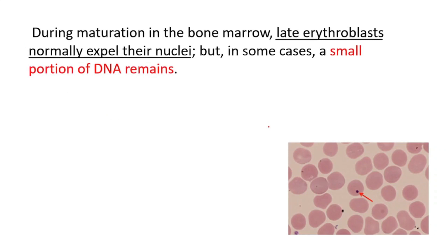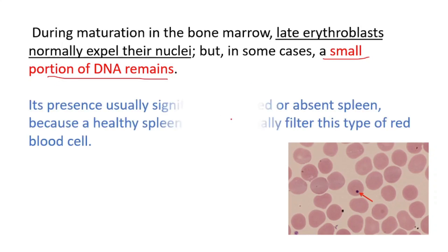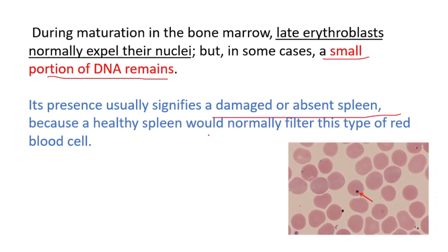During maturation in the bone marrow, late erythroblasts normally expel their nuclei, but in some cases a small portion of DNA remains. Its presence usually signifies a damaged or absent spleen, because a healthy spleen would normally filter this type of red blood cell.